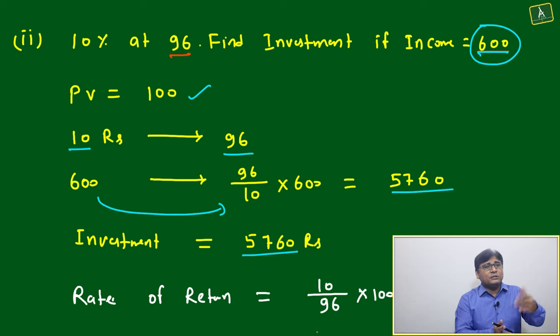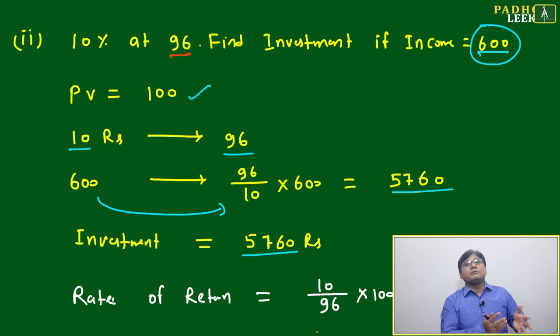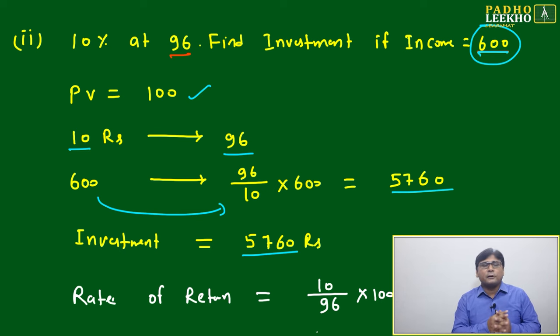You'll see the same problem given in reverse order or in different orders. For example, to get 600 rupees of income, what will be the total investment if the share is 10% at 96?